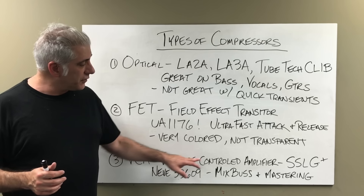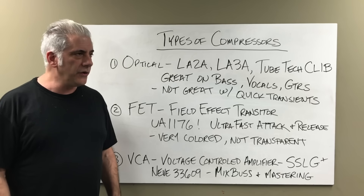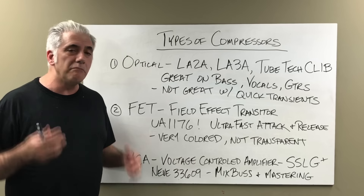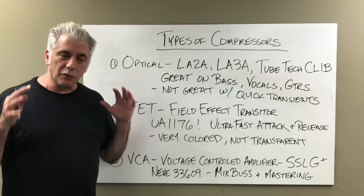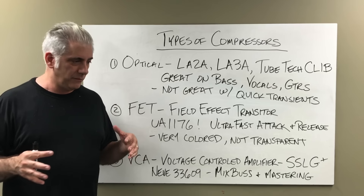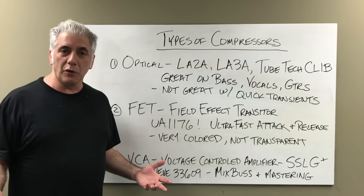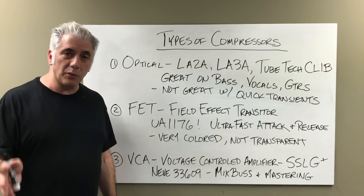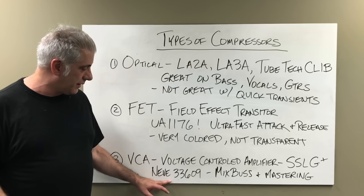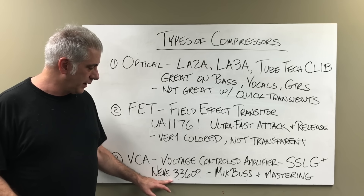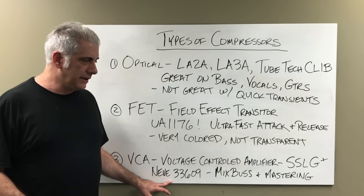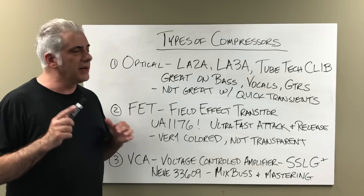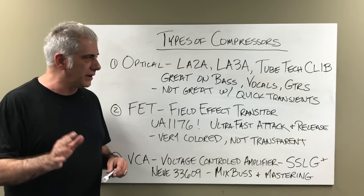The VCA compressor — Voltage Controlled Amplifier — includes the SSL G Plus and the Neve 33609 Compressor Limiter. These are mix bus and mastering compressors — great at handling program information, meaning they're great at handling mixes. If you can afford the real ones, fantastic, but the emulations are great. I love the UAD version of the 33609 — it's a killer compressor. It's actually more versatile than the SSL bus compressor because you can use it on other things, and because it has both a compressor and a limiter, it's really useful.